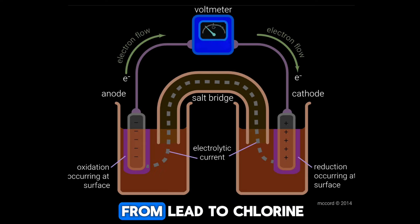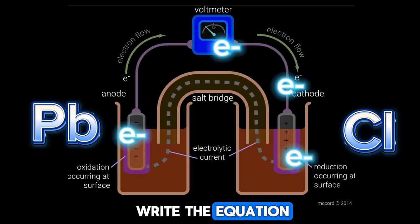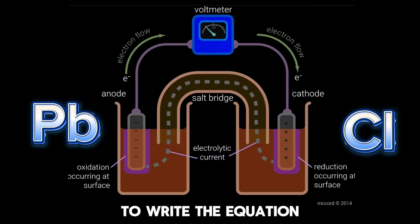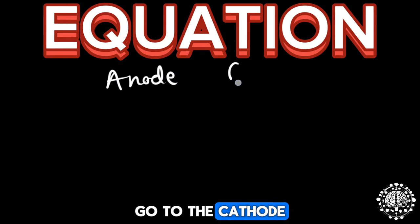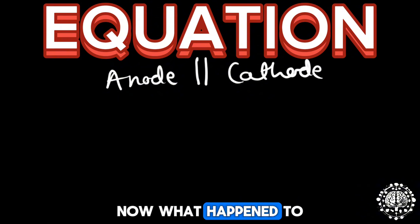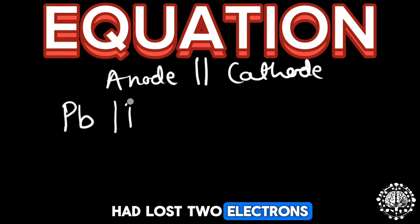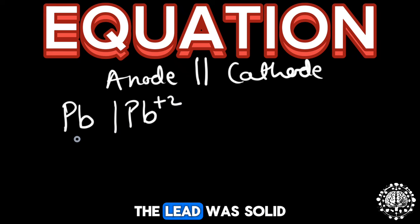To write the equation we will start with the anode and then we will go to the cathode separated by two big lines. What happened in the anode is that the lead had lost two electrons so it became an ion. The lead was solid and it became an aqueous solution. And then we have two lines.